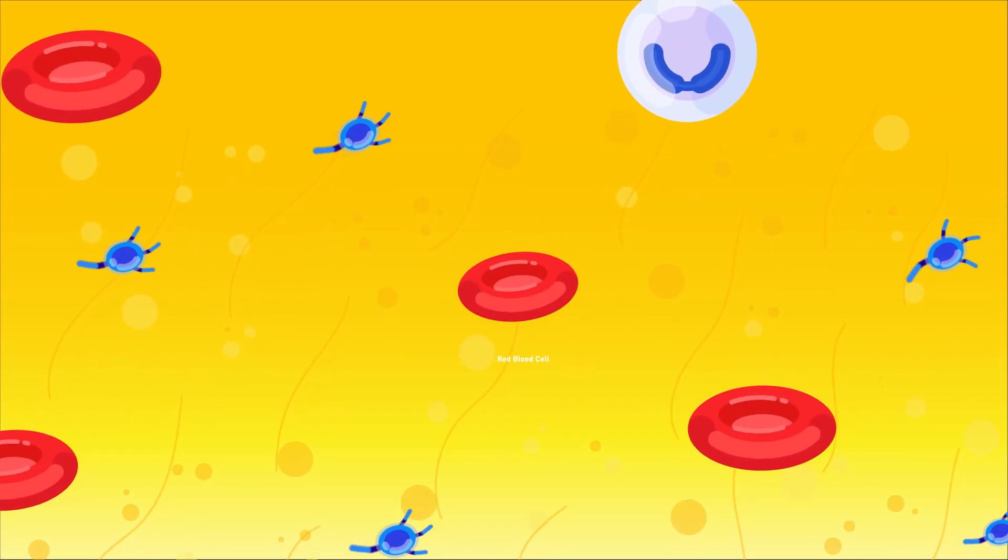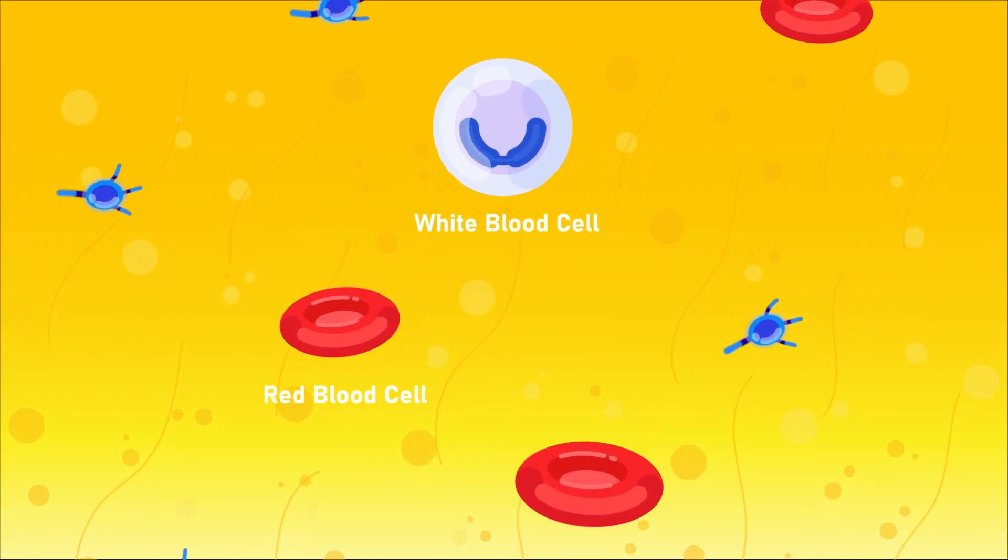Our blood is composed of plasma, red blood cells, white blood cells and platelets.